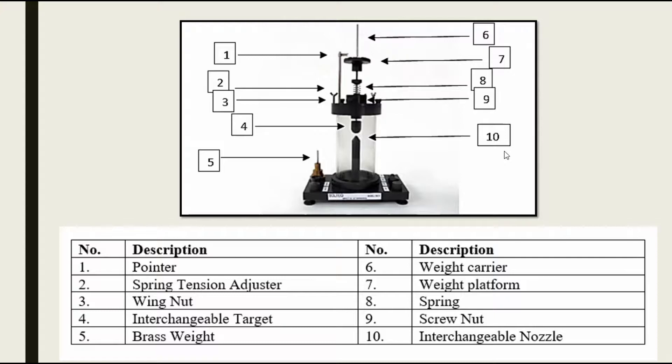In this experiment, we will change the nozzle and the target respectively to see the difference of height, and we use a ruler to measure the difference of height at the pointer.